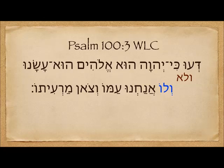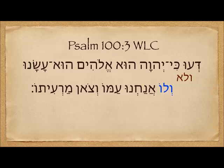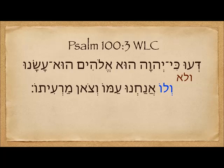In a recent video on small words, we covered the difference between 'lo' meaning 'no' and 'lo' meaning 'to him.' There are perhaps about 15 cases of what appears to be a misspelling involving these homophones. One of them is in Psalm 100:3. The verse says: 'Da'u ki Yehovah hu Elohim' — know that Yehovah, he is God — 'hu asanu,' he made us — and then we have two choices. They both sound the same: 'v'lo anachnu' can mean either 'and not ourselves' — we didn't make ourselves — or 'v'lo anachnu' — we are his. 'Amo,' his people, 'v'tson marito,' the sheep of his pasture.